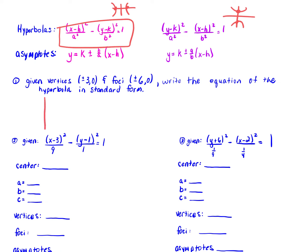It would help if we plot the points. Our vertices are at positive 3 and negative 3 at 0, so we go to positive 3 and negative 3 and stay at 0. So we're going to use the equation where x comes first because it's going to be a horizontal hyperbola. Our standard form is x minus h squared over a squared minus y minus k squared over b squared equals 1.